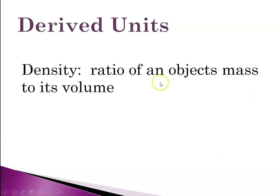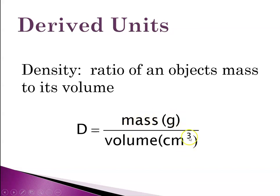And density is a ratio of an object's mass to its volume. So again, a complex unit is based off of the two base units of mass and length, because volume is based off of length.